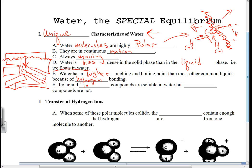All right, polar and ionic compounds are soluble in water, but nonpolar substances are not.